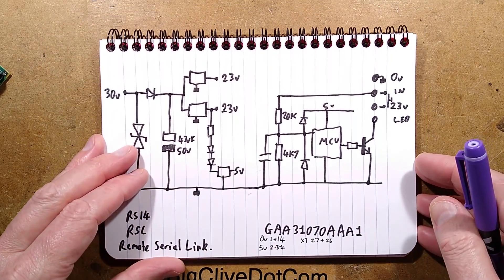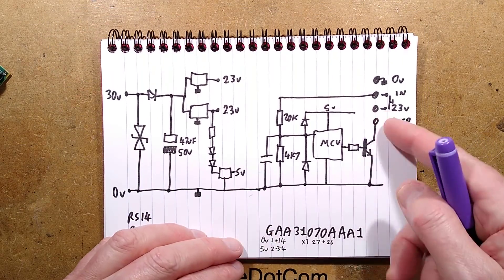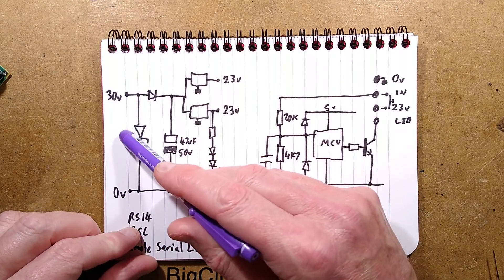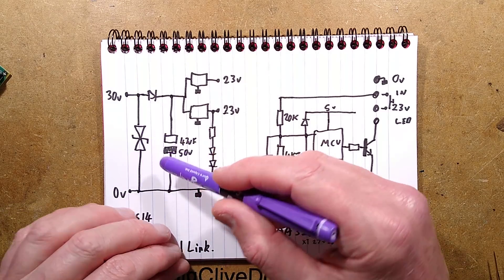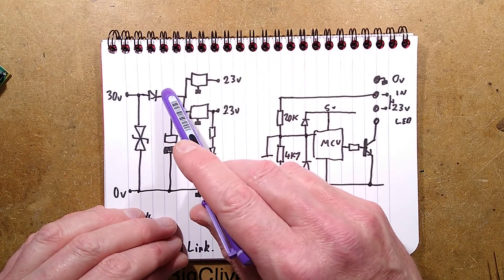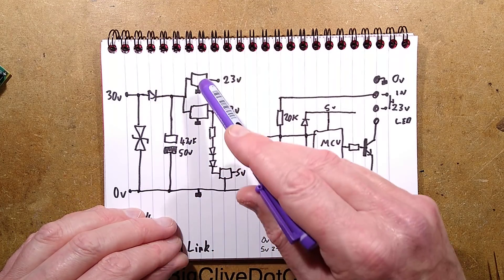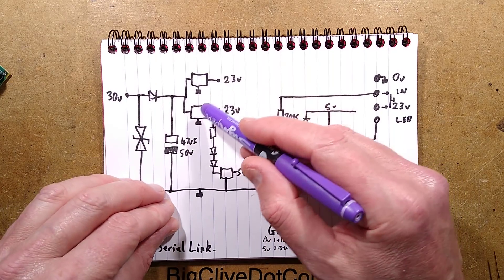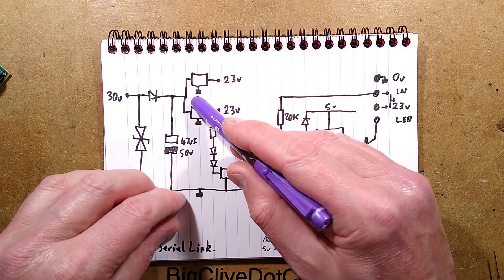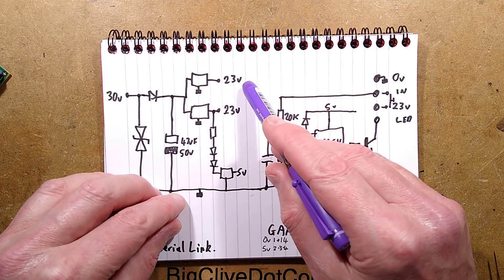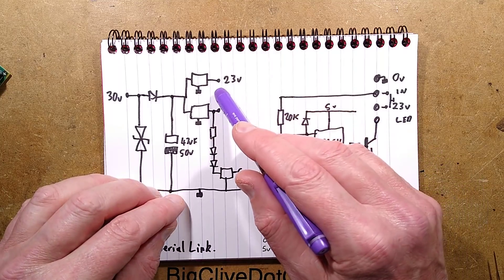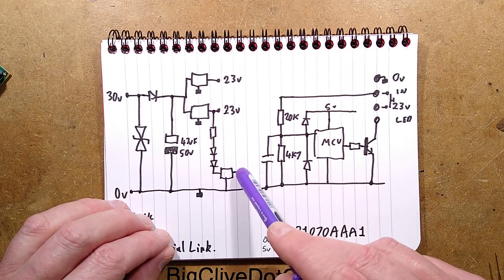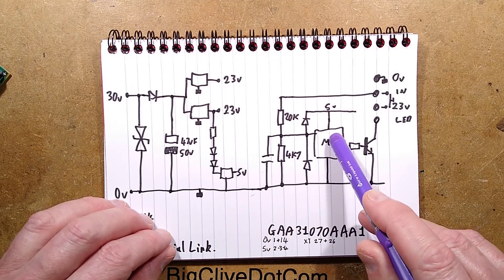Here's the basic schematic showing the power, inputs and outputs, not the network. The 30 volts come in, there's the transient suppression diode, the polarity diode, the smoothing capacitor, and the two regulators. These aren't fixed voltage regulators - they're variable with a resistive divider setting 23 volts, so they can custom program the voltage. There's a tap-off through a resistor and diodes to the 5 volt regulator that provides supply to the microcontroller.